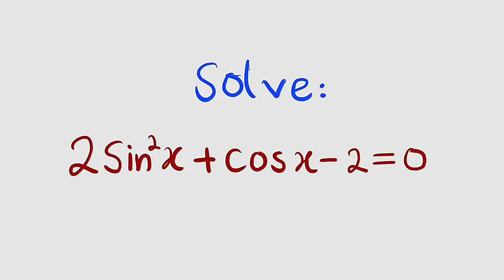Hello, good day viewers. Let us find a solution to this trigonometric equation. We are asked to solve the equation 2 sine squared x plus cosine x minus 2 equal to 0.